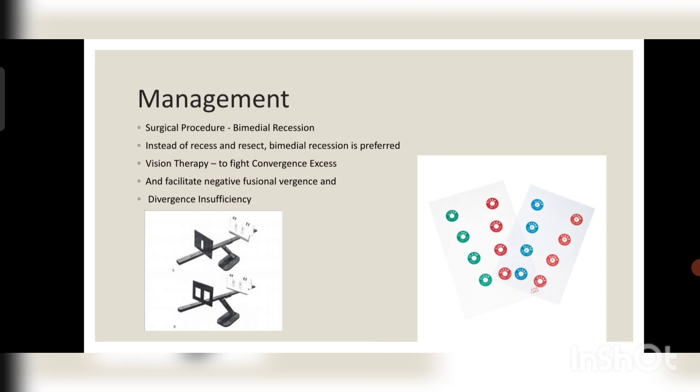Regarding management of infantile esotropia, it needs to be operated at the earliest. When the child comes to an eye surgeon, the surgeon prefers to perform a bimedial recession rather than a resection and recession of the lateral rectus. The surgeon prefers to do a bimedial recession.